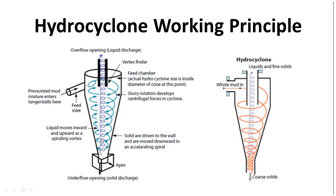Another vortex or spiral movement moves upward, created because of the light fluid column in the center of the cone and because of the entrance of air. This inner spiral movement or vortex of the fluid, carrying the lighter solid particles, moves upward and exits from the vortex finder or overflow.